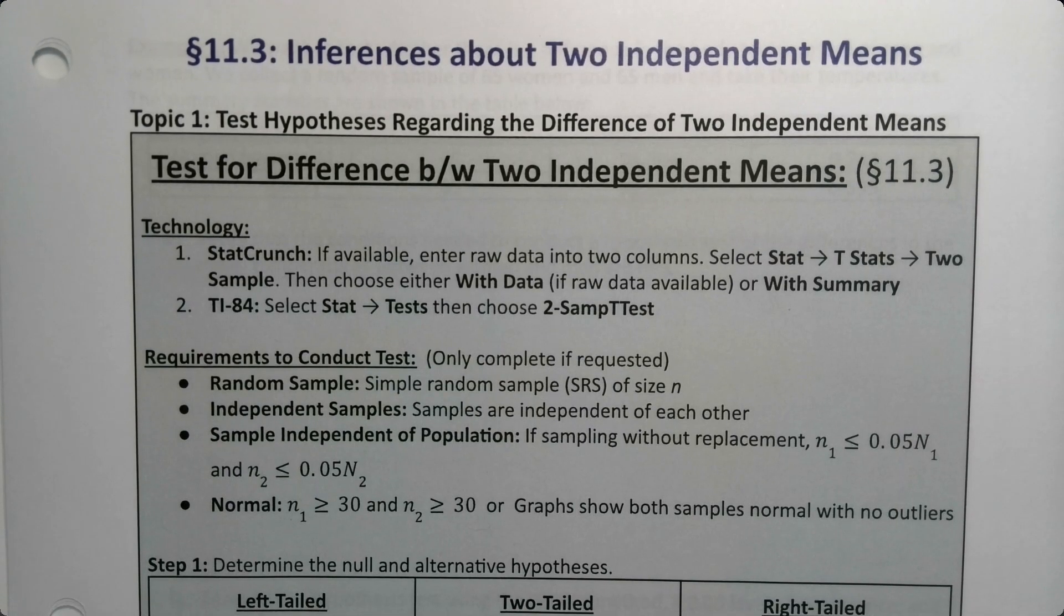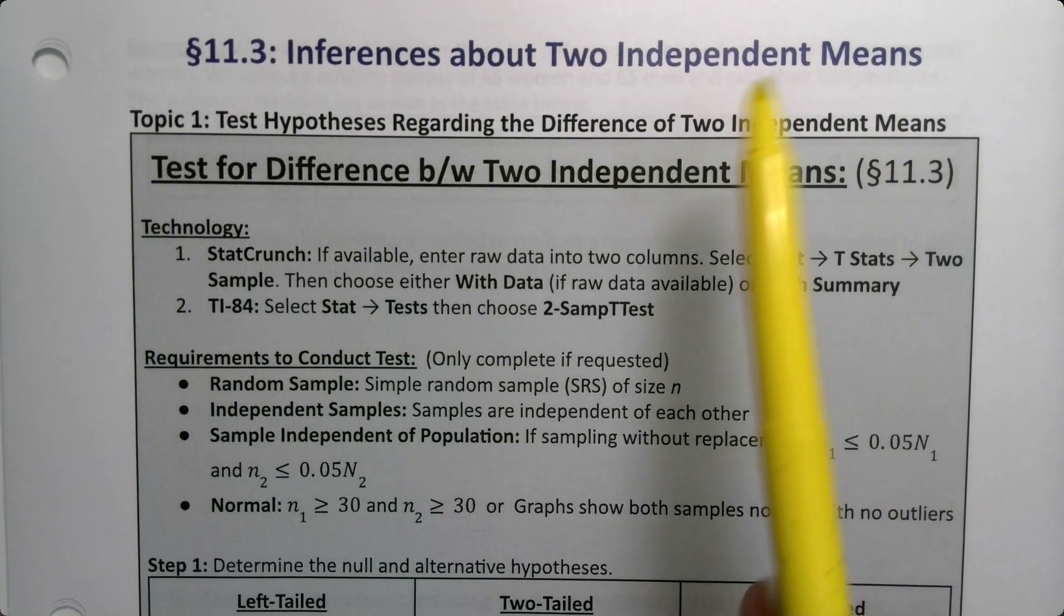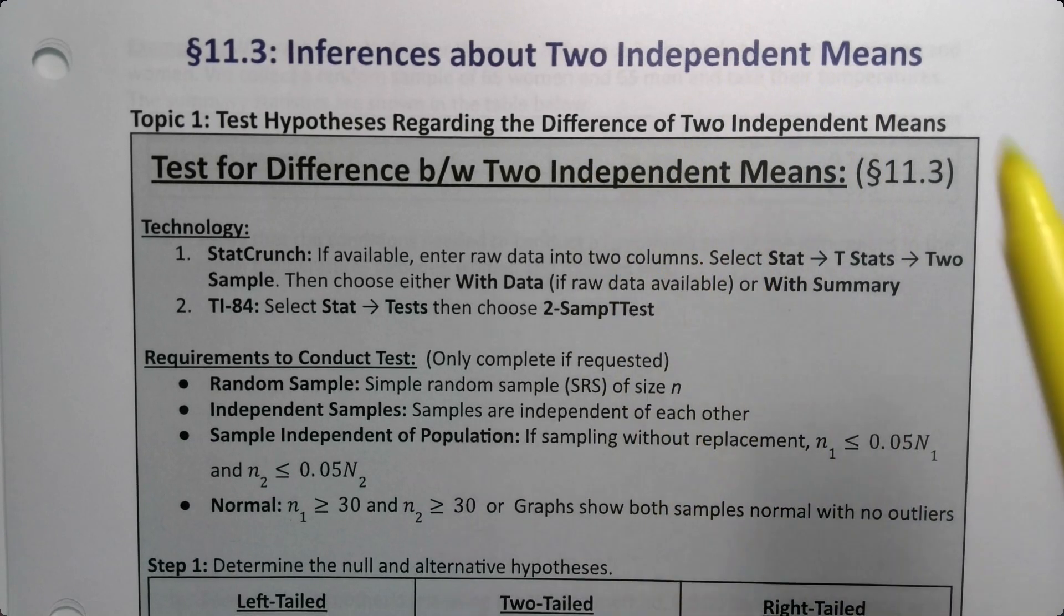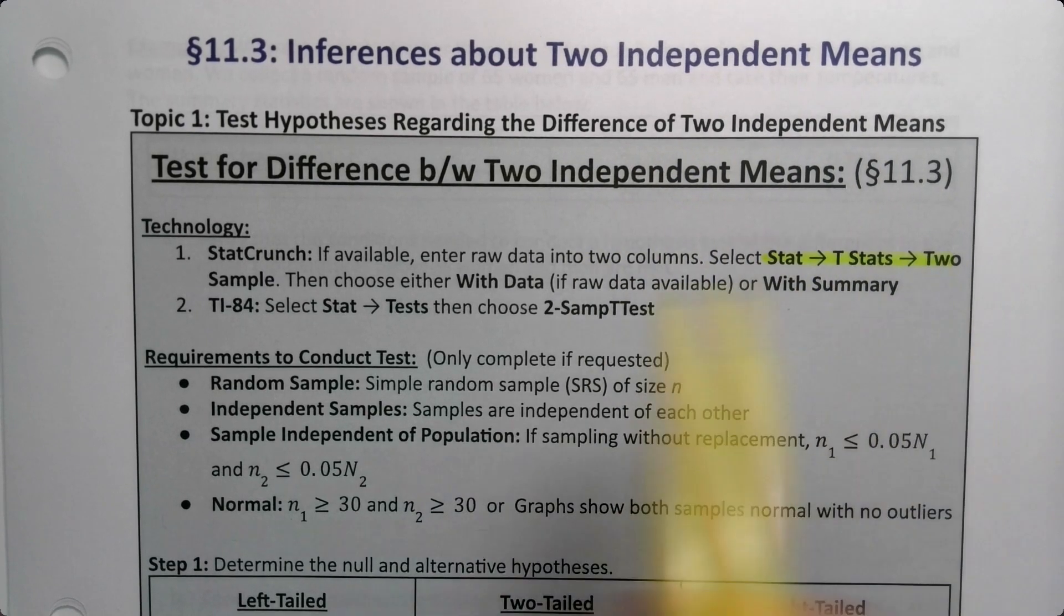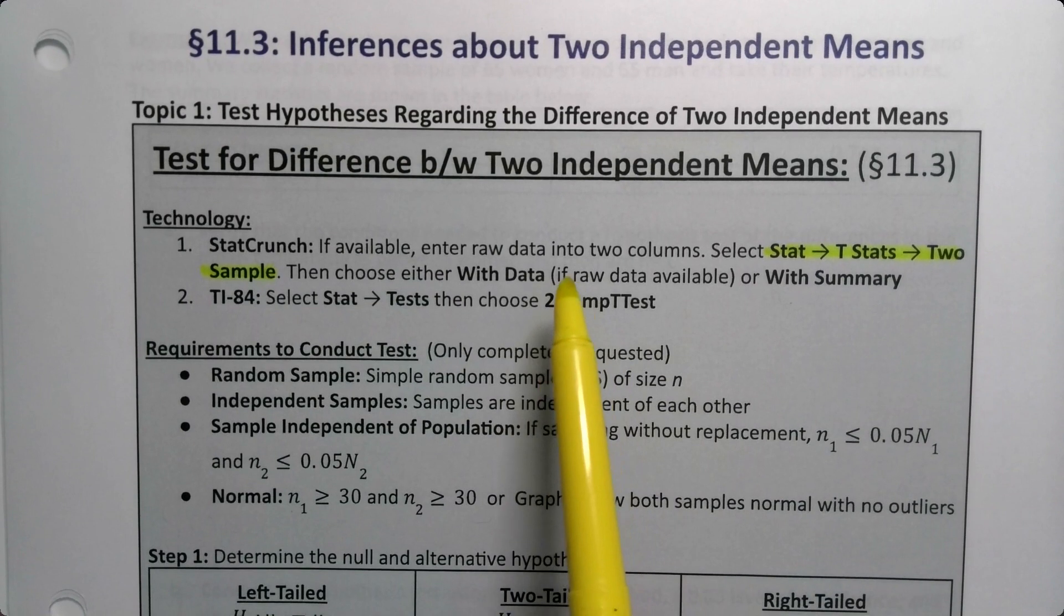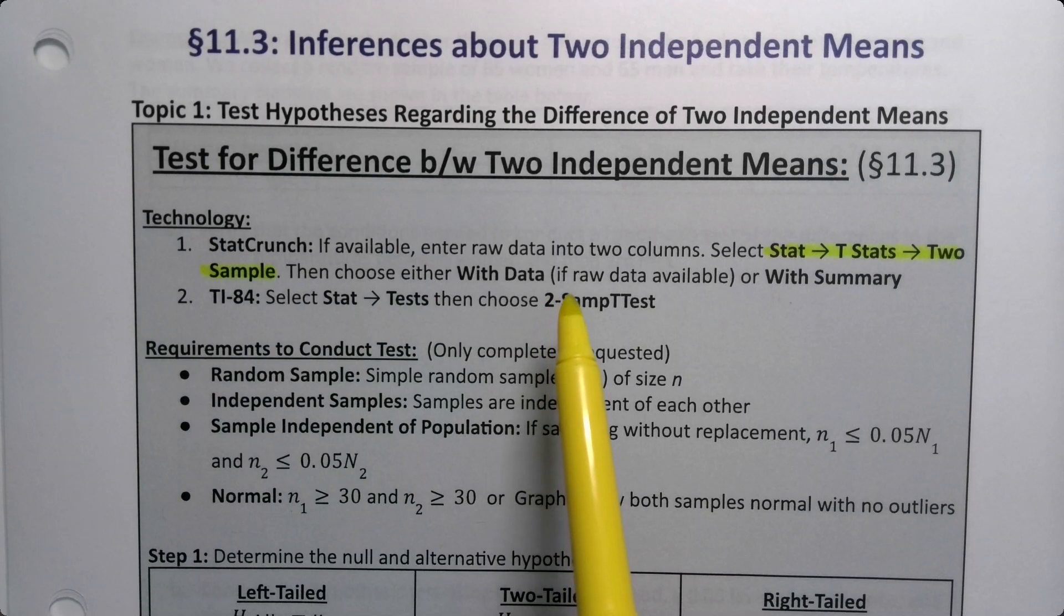In section 11.3, we're going to work with means again, but this time we're going to be working with two independent means, which is different from section 11.2 because these are going to be independent, not dependent. There's our StatCrunch main path right there, but as we saw in chapter 10, we'll have to make a choice between data or summary depending on if we have the raw data in our StatCrunch spreadsheet or not.